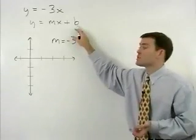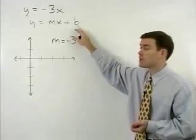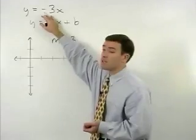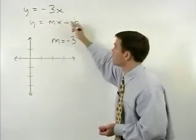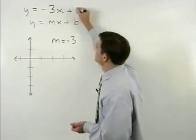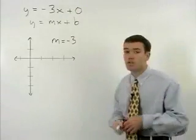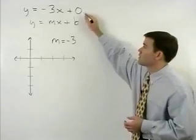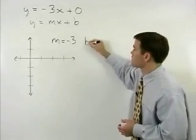But what is our y-intercept, or b? Well, y equals negative 3x can be thought of as y equals negative 3x plus 0. So you can see that our b, or y-intercept, equals 0.